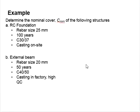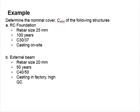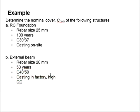Let us try another example. This example is regarding an external beam where the reinforcement bar size is equal to 20, design life is 50 years, concrete grade is 40, and they are cast in the factory with high quality assurance. Again, you may pause the video and try to solve it yourself.